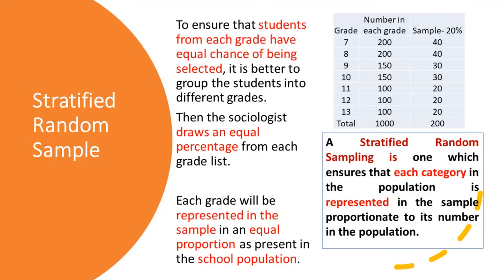No grade is over- or under-represented, or not represented in the sample. Why do we call it a stratified random sample? Simply because we stratify — meaning we divide the population into different subgroups — and then we take an equal proportion using a random sampling method from each subgroup.